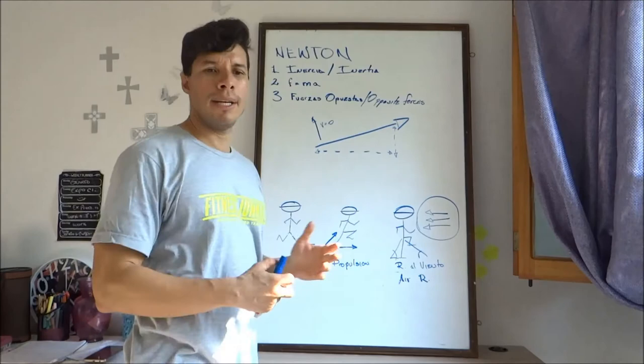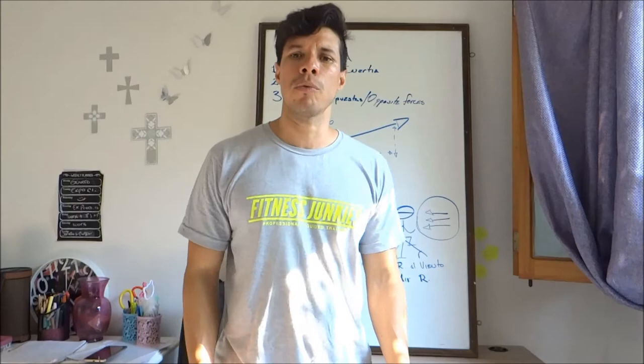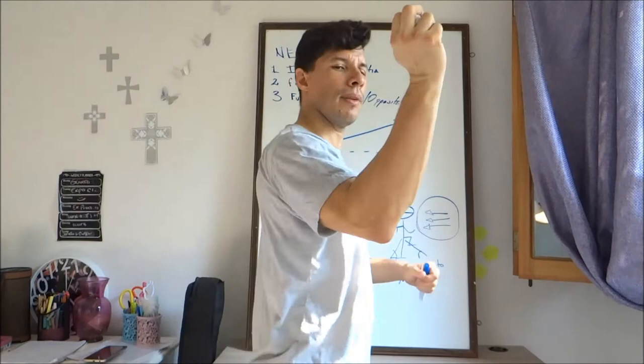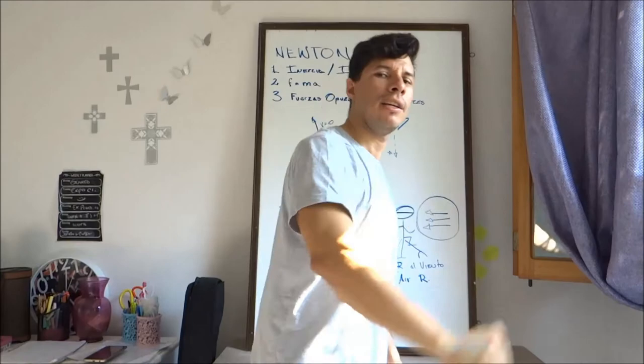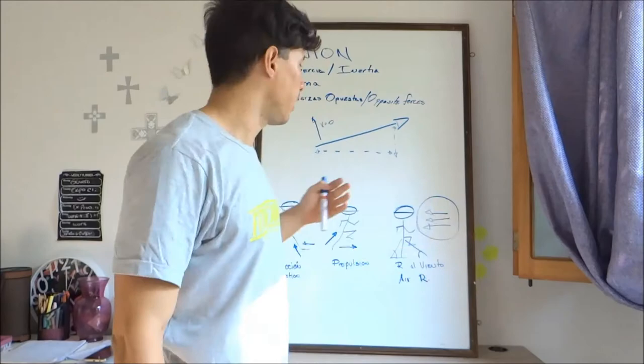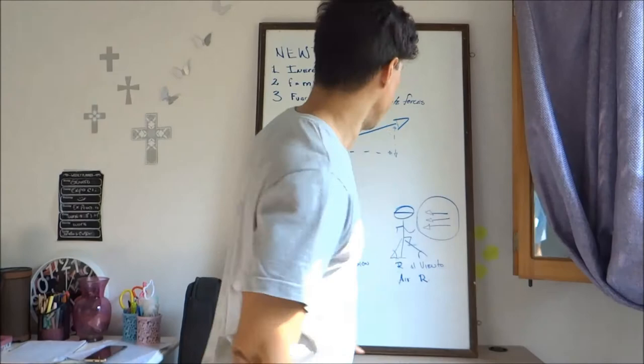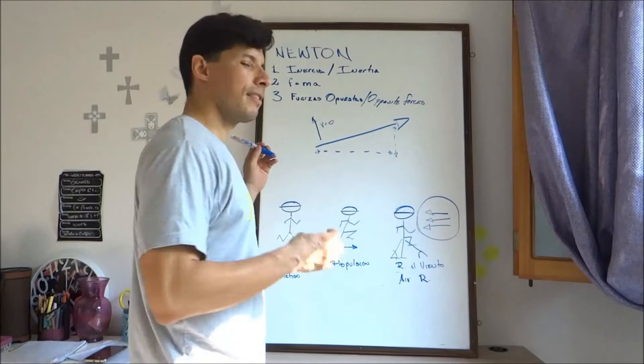The third law is opposite forces. This means that, well, I'm standing here, I have to produce a force in opposition to gravity on the planet so I can stand up. If I throw a ball, I'm putting as much force into the ball as the ball is putting into my hand. And of course, the ball will get displaced because it weighs less. It has less mass. But if we had the same mass, we would oppose each other.